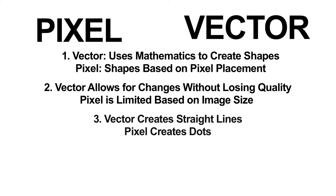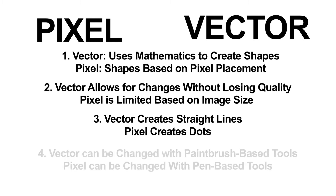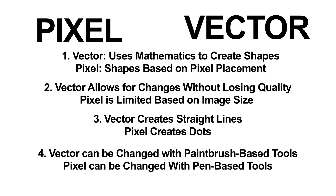Three: vector masks create straight lines around your selection, while pixel masks create dots. Four: vector masks can be changed using tools like the paintbrush, while pixel masks need to use the pen tool to be changed.